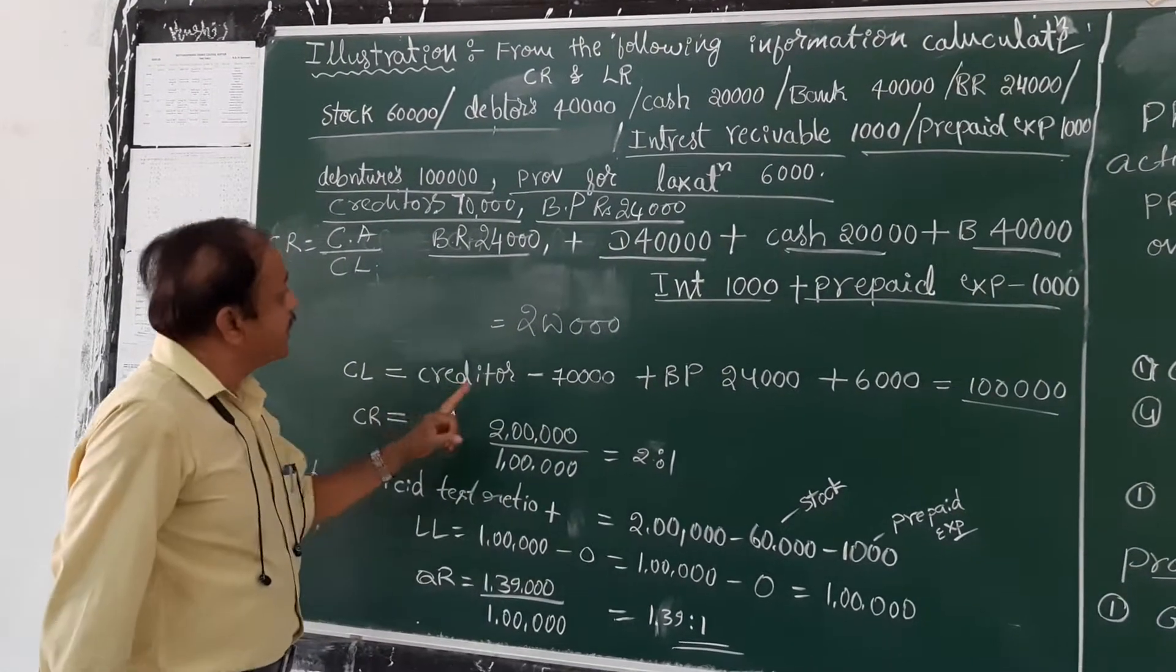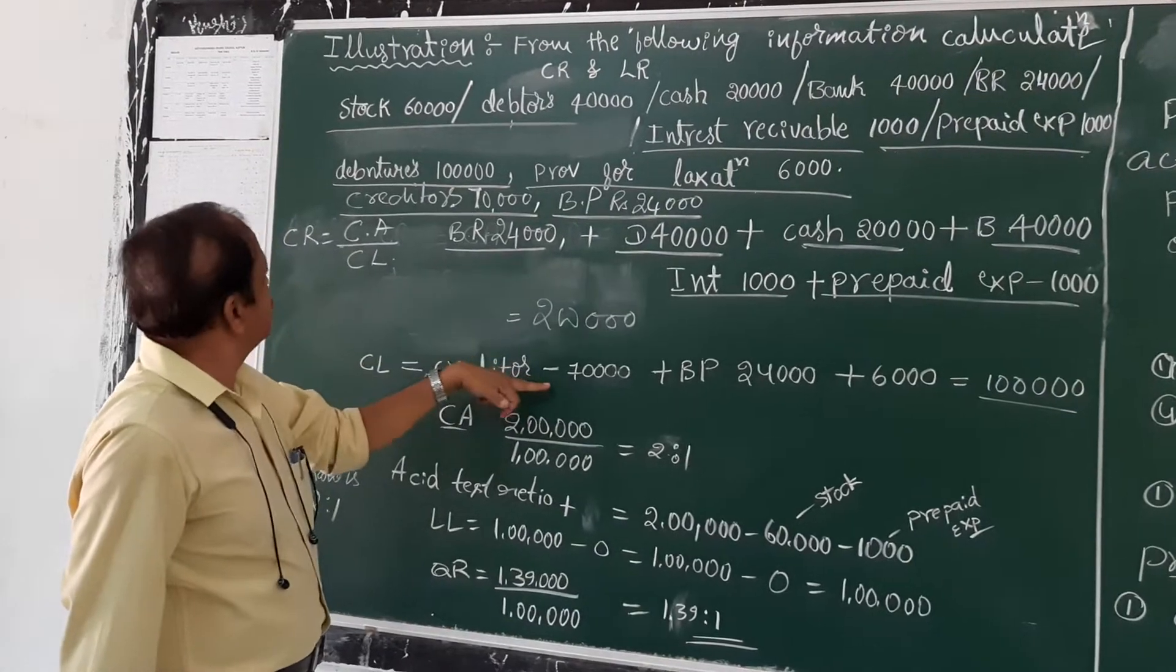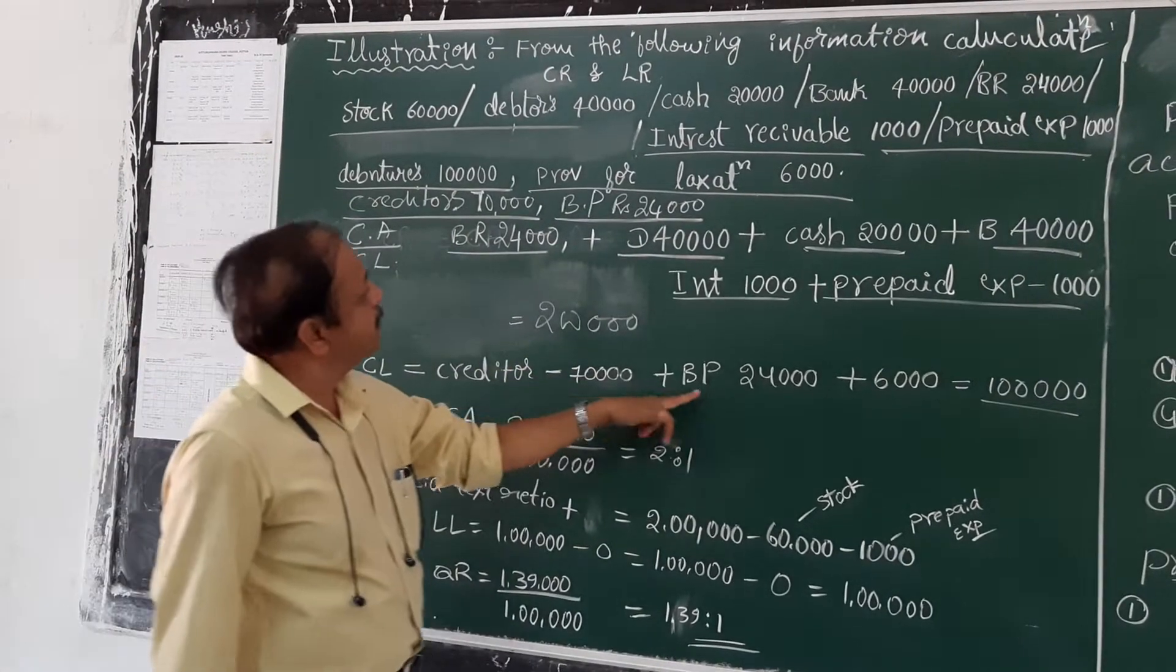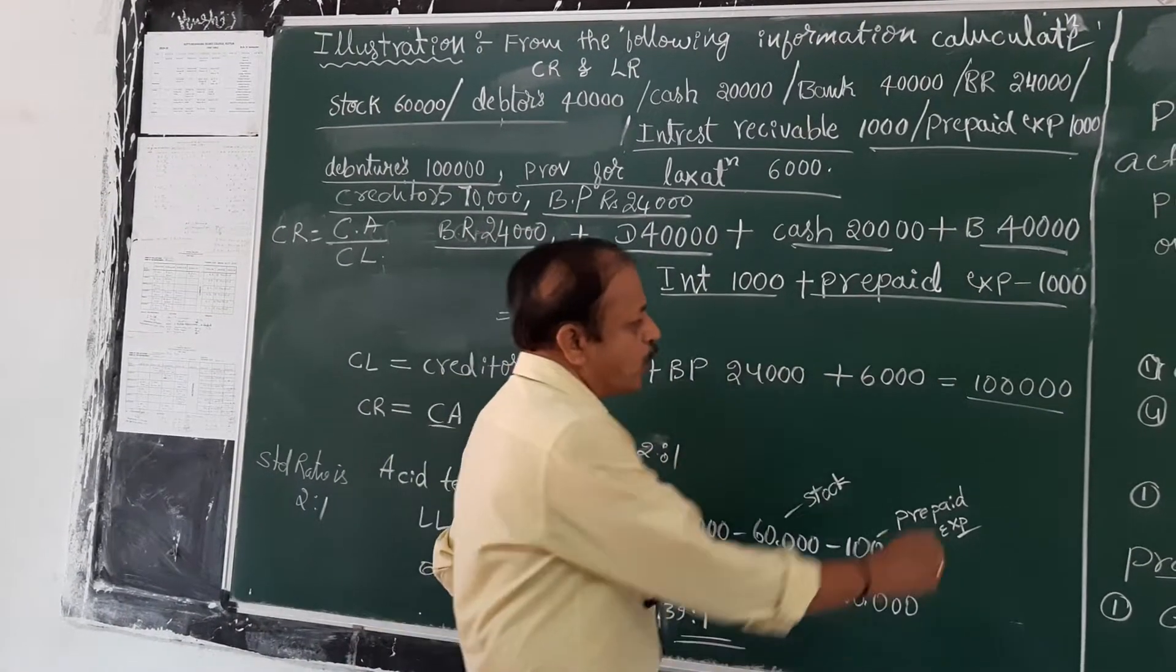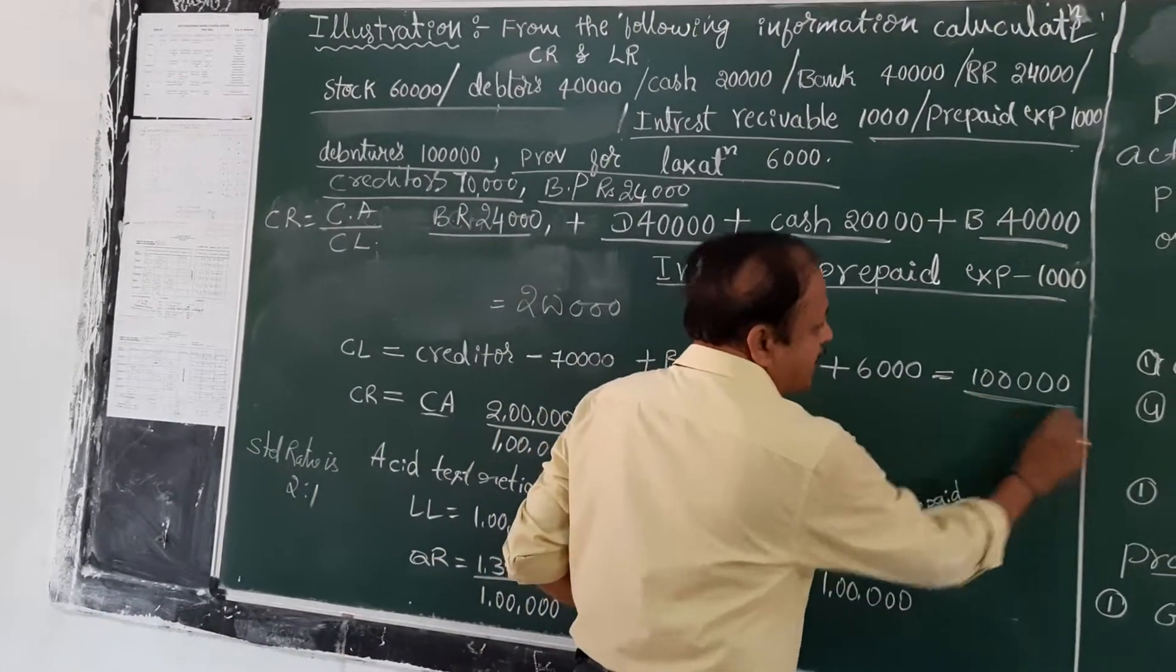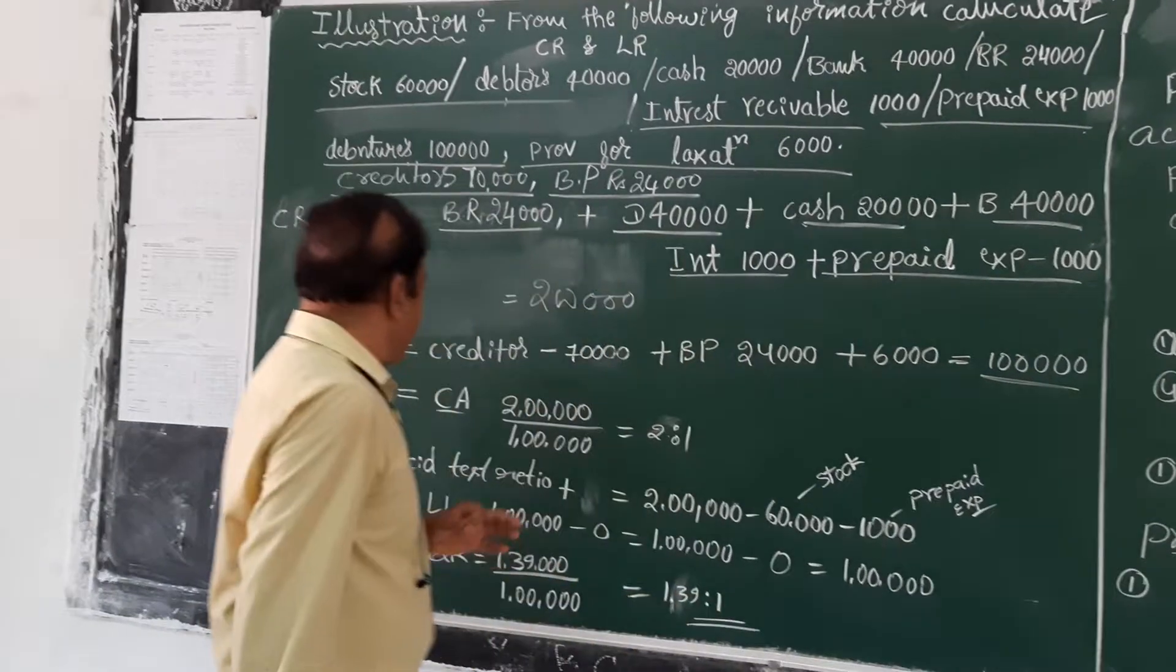Current liabilities: creditors 70,000, then bills payable 24,000, then provision for taxation 6,000. The total current liabilities amounts to rupees 1 lakh.